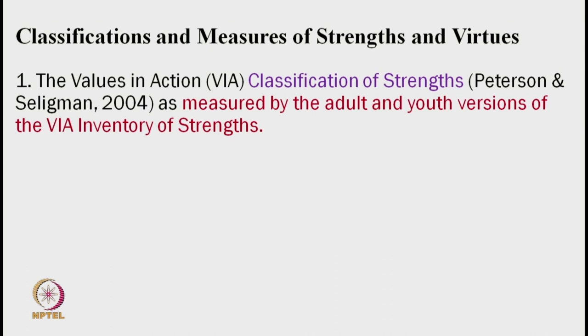In today's class, let us know some recent scholars' work on strengths and virtues. In this category, there are three groups. Number one, the Value in Action, which is initial work on character strengths and virtues — a classification of strengths proposed by Peterson and Seligman in their book. These character strengths can be measured by the adult and youth version of the Value in Action Inventory of Strengths.